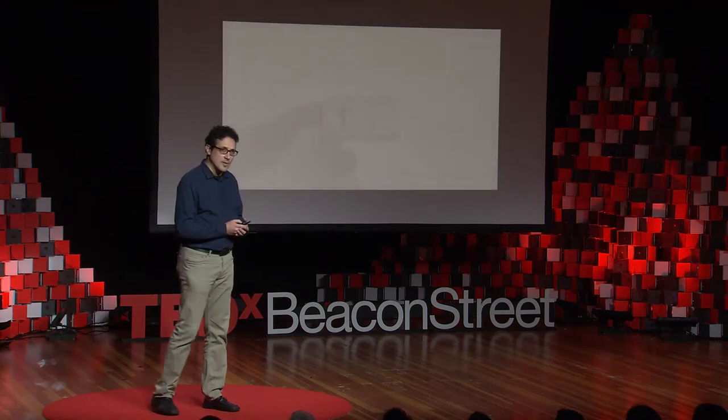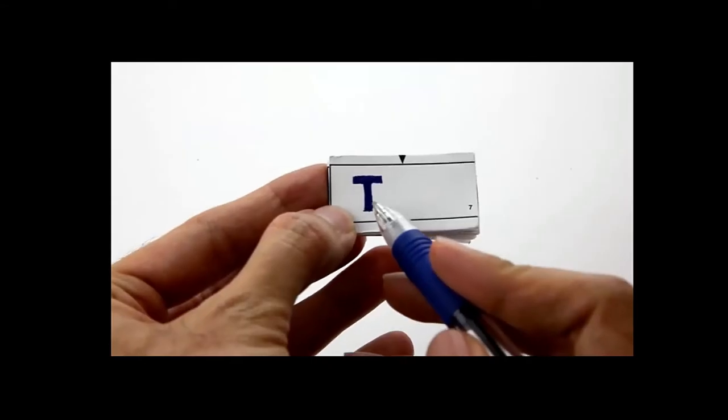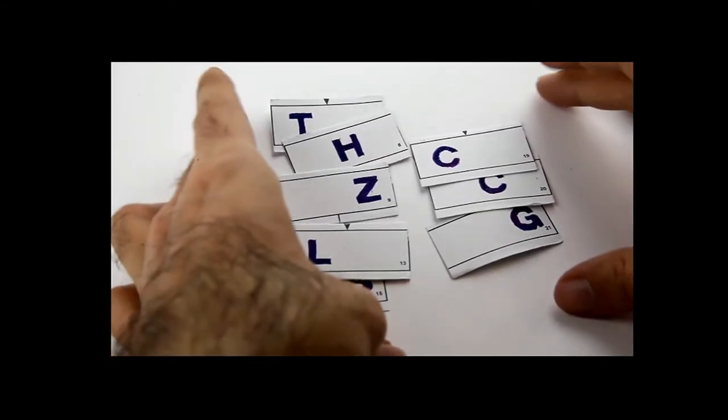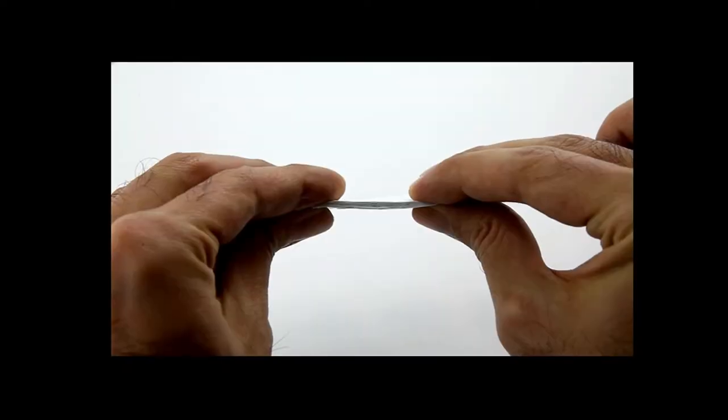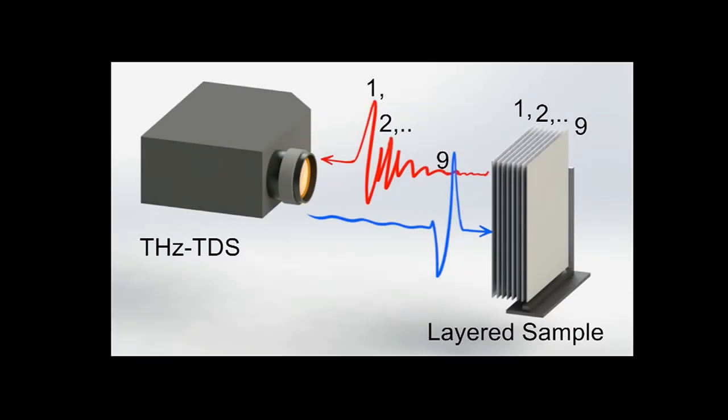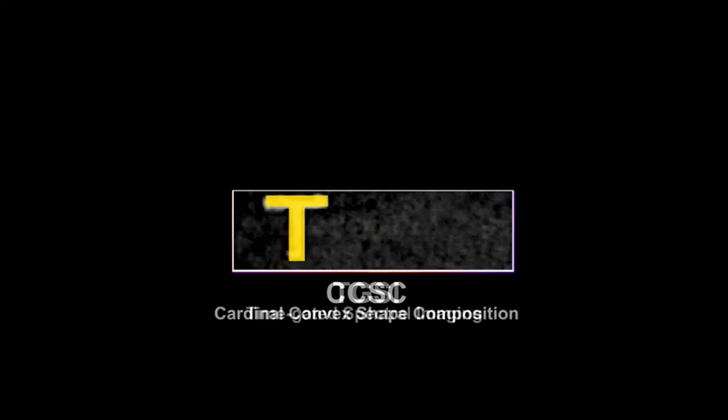Here is a video of an experiment that we did showing this concept. In this experiment, we printed letters on nine pieces of paper. We stacked the paper together, mimicking a closed book. We used terahertz to scan through the stack. And this is what you see — the T on the first page, then the H on the second page, then the Z on the third page, and so on, until we can recover the nine letters on all these pages.